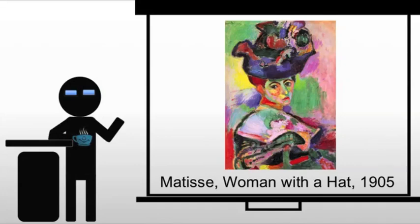In terms of the Fauve period, we start with Matisse's Woman with a Hat. This was first exhibited in the 1905 Salon in Paris. This work was at the center of a controversy that led to the christening of the first modern art movement of the 20th century: Fauvism.